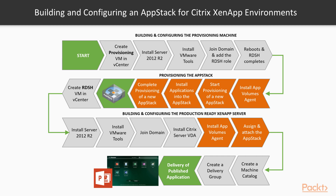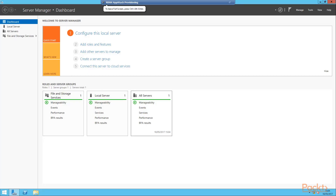It's important to note when to install the App Volumes agent in particular, which has been highlighted in orange, along with the other App Volumes specific tasks. In this video, we are going to cover the steps from where we add the RDSH role to the provisioning server and then install the App Volumes agent. We are going to start by installing the RDSH role onto our RDSH AppStack provisioning server. Just as a reminder, you need to capture AppStacks from the same operating system, so in this instance it will be a Server 2012 and we will install the RDSH role onto this server first.